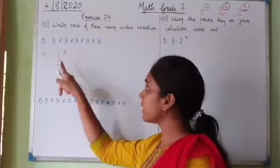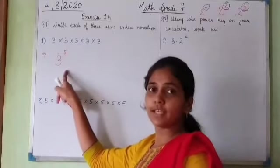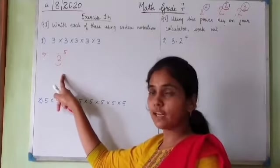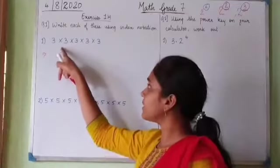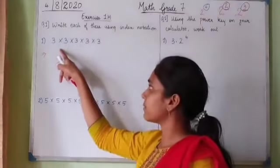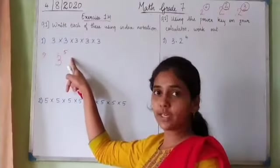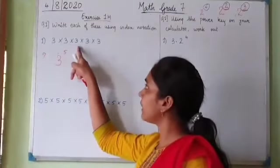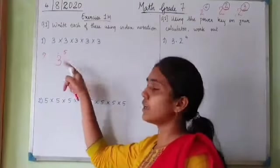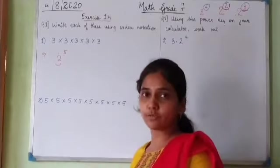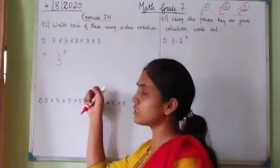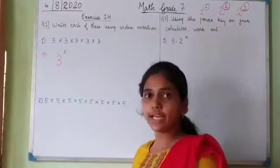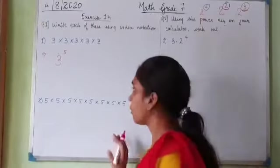When we write a number in the form 3 raised to 5, that means the base 3 is getting multiplied to itself 5 times. This is very simple to write in index notation.